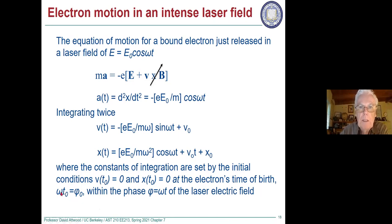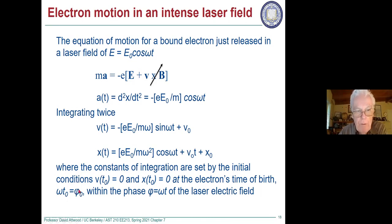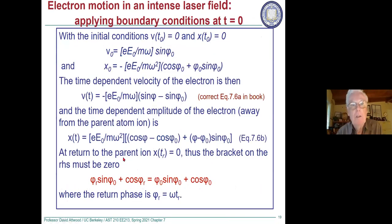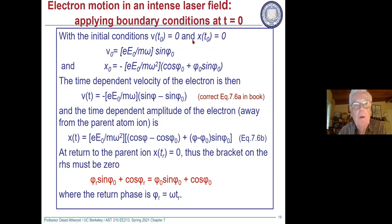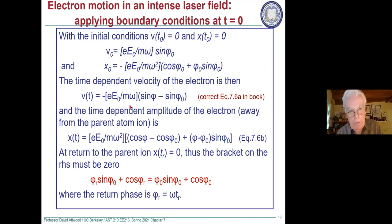The time is measured from the peak of the pulse, which is a cosine term. Phase is Omega times time, and phi_zero is the birth time. With the initial conditions from the three-step model — initial velocity zero and initial position zero at the parent ion — we can solve for v_zero and x_zero from those equations.